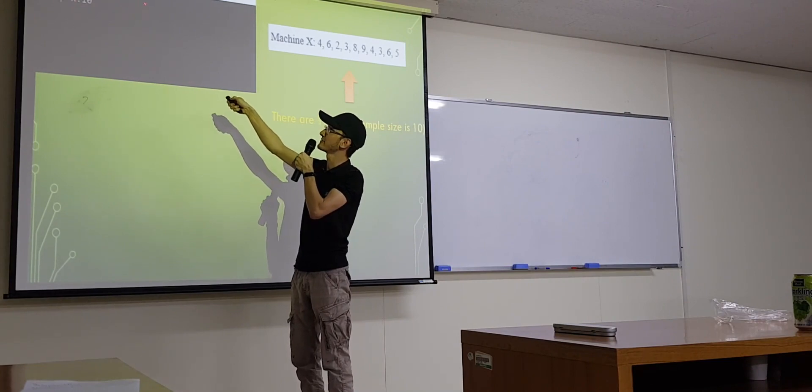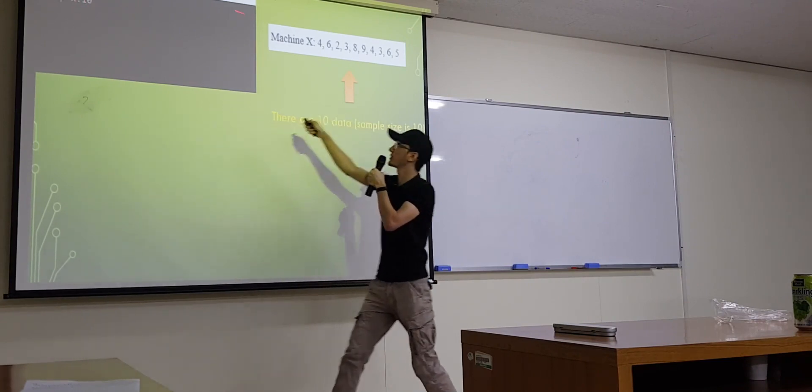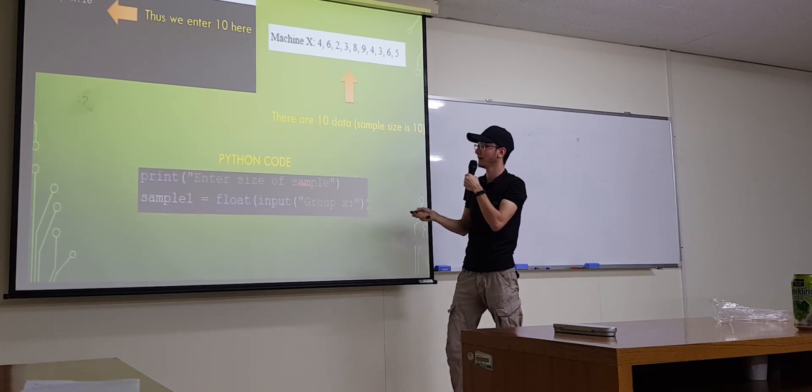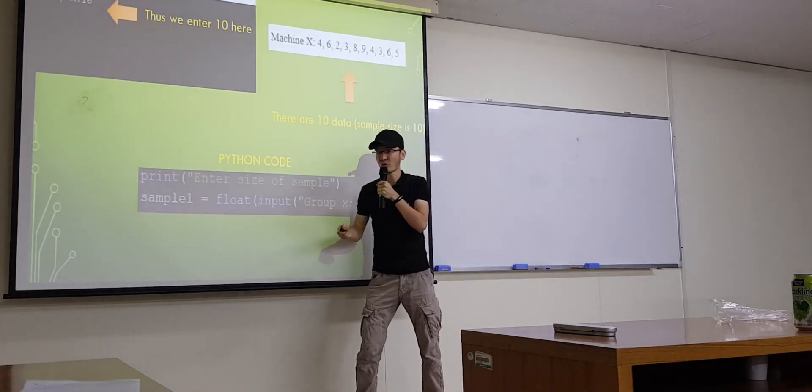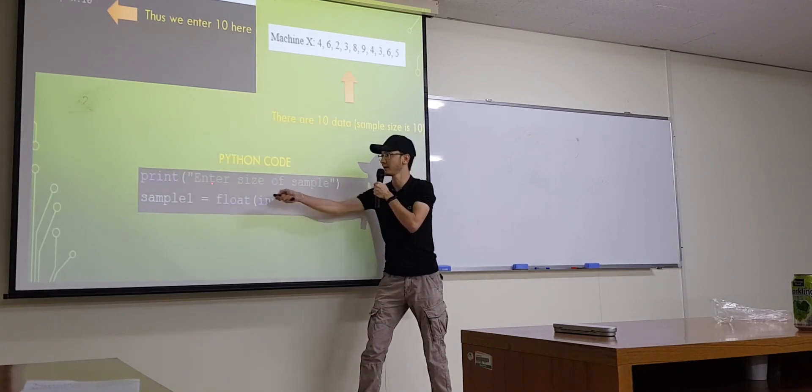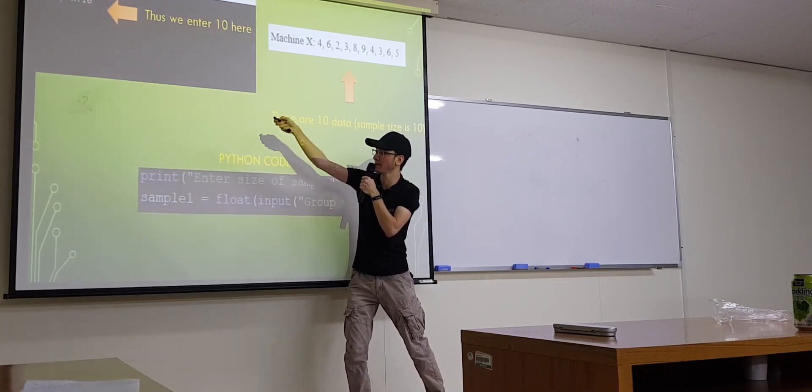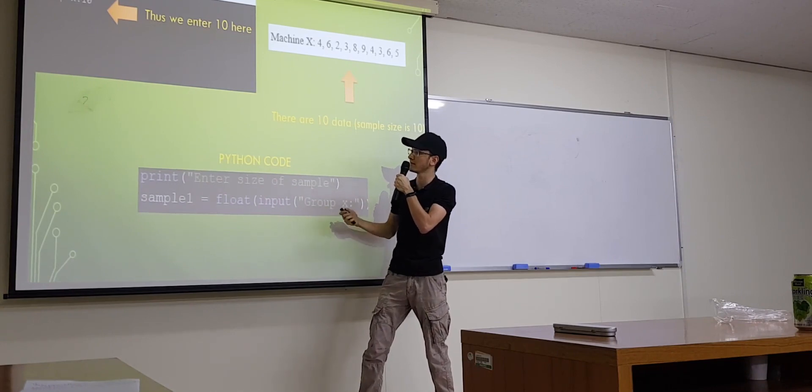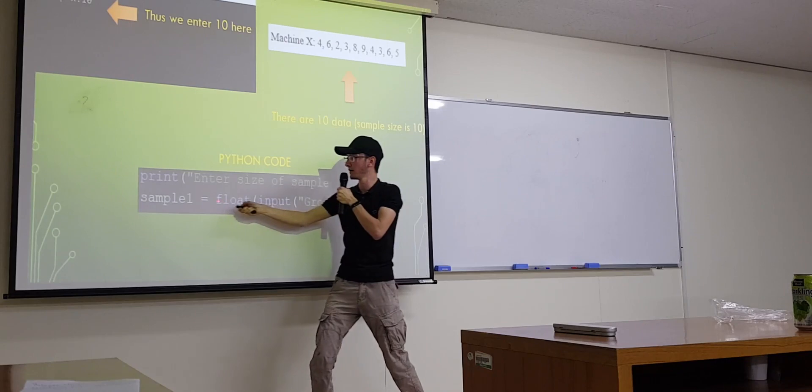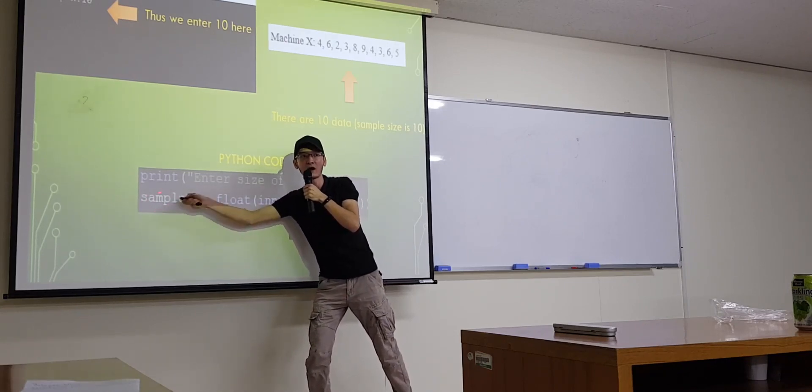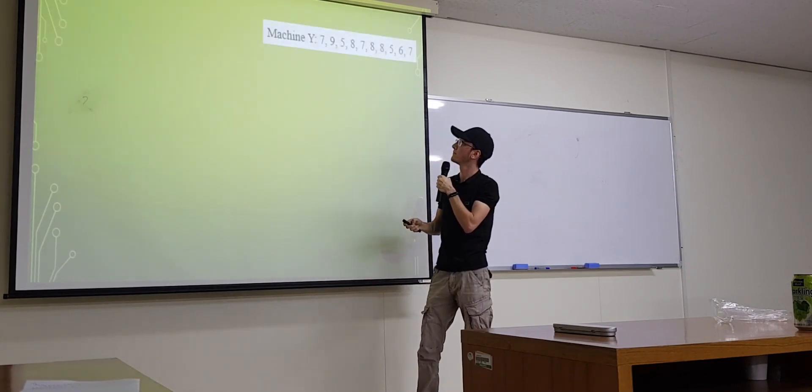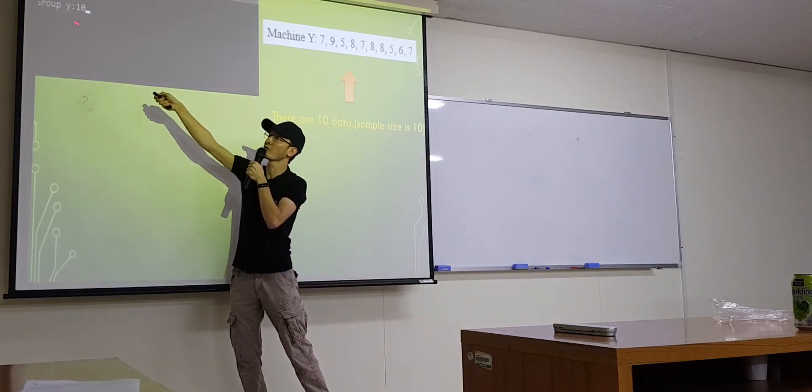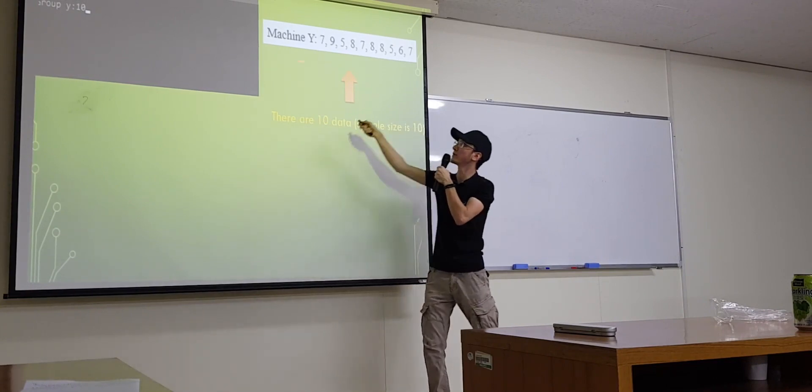Our program asks enter size of sample. For group X, 10. Because we have 10 data, those we entered 10 here. And the Python code, how it works? This print function, just printing this text, enter size of sample. And we are using input functions in order to get data, in order to get the number. And we put 10. 10 counts here. And this variable takes this 10. Now our variable is 10.